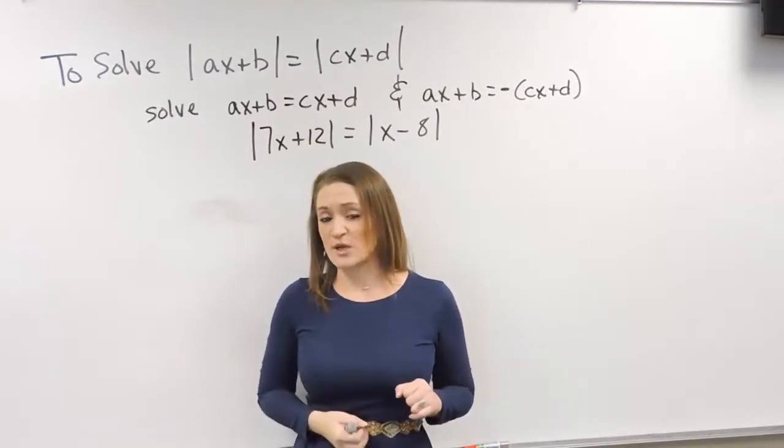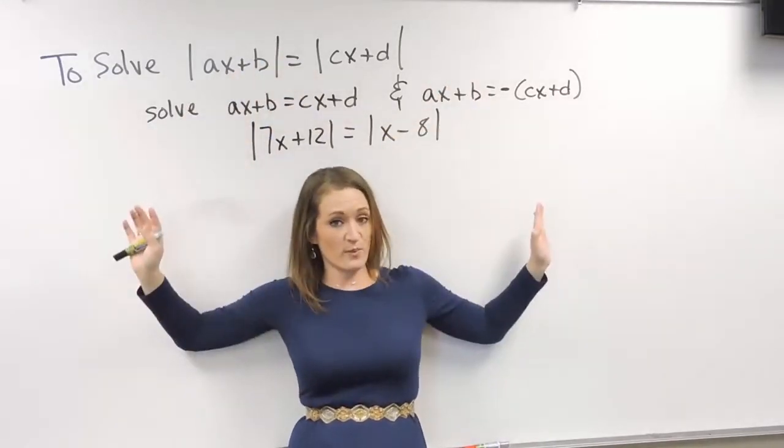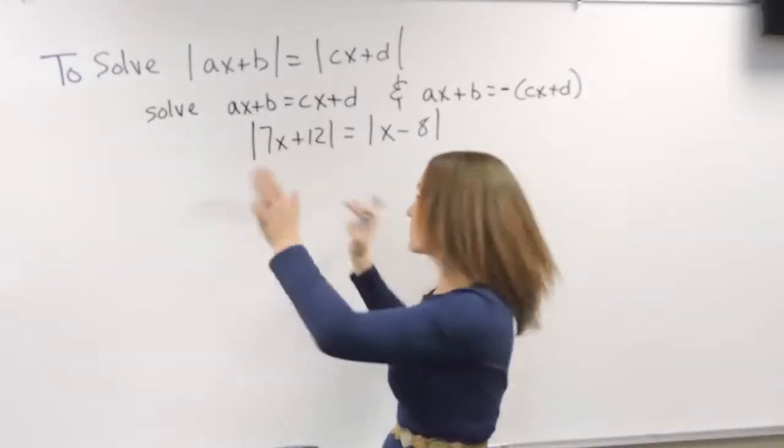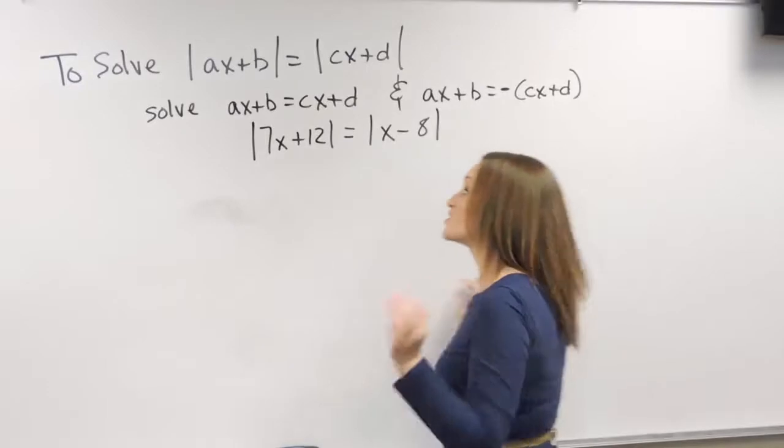When it comes to absolute value equations, we always split our example into two different problems. The first problem is always our normal problem, the way that it looks as is. And the second problem, we always change it.